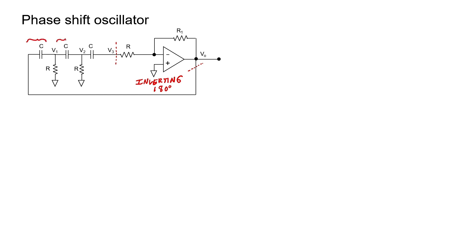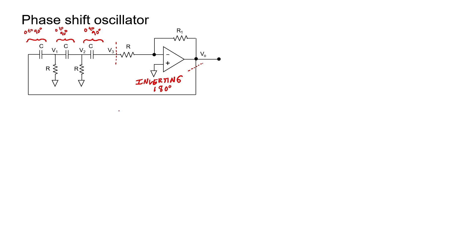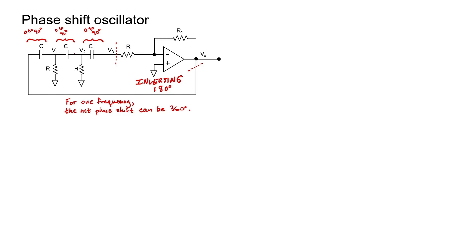We have three capacitors all in the series configuration. All three can shift the phase of the signal forward somewhere between 0 and 90 degrees. How much phase shift depends on the frequency. For low frequencies, the phase shift will be closer to 90 degrees; for high frequencies, it will be closer to 0. For one particular frequency, the signal will receive a net phase shift of 360 degrees in the loop — and it only works for that one frequency. If we were to replace the inverting amplifier with a non-inverting amplifier, the phase shift oscillator would not work, because the signal passing through three capacitors in series could never achieve a net phase shift of 360 degrees. It's possible to achieve 180 degrees phase shift at one very special frequency, and that's why the phase shift oscillator works.